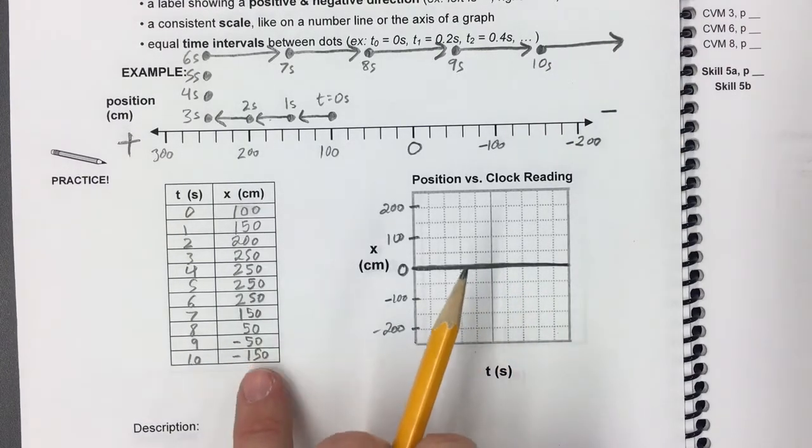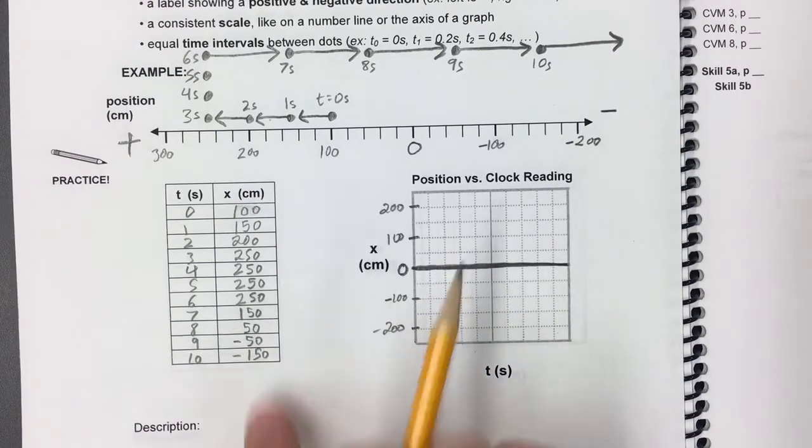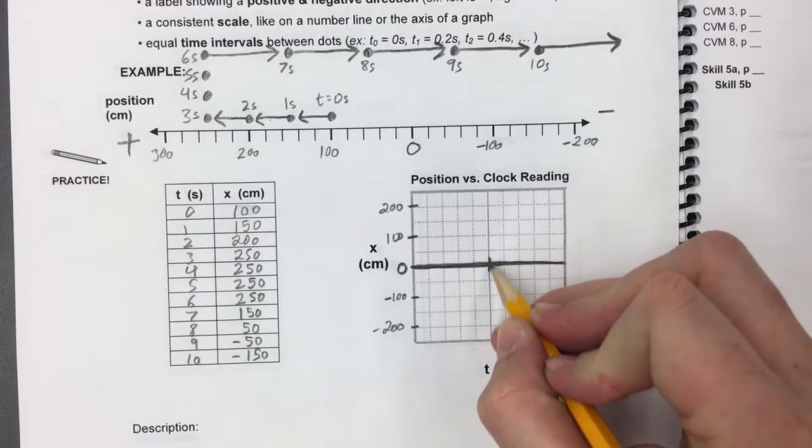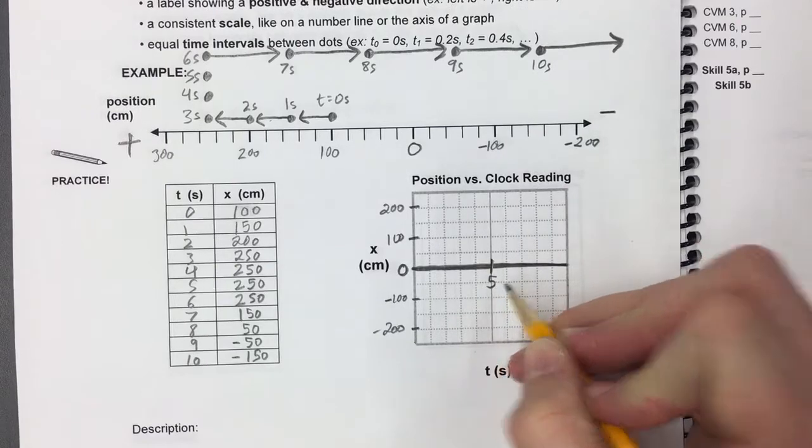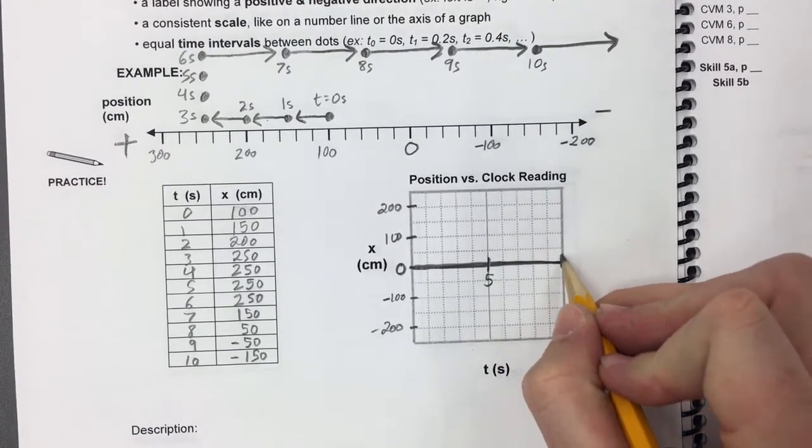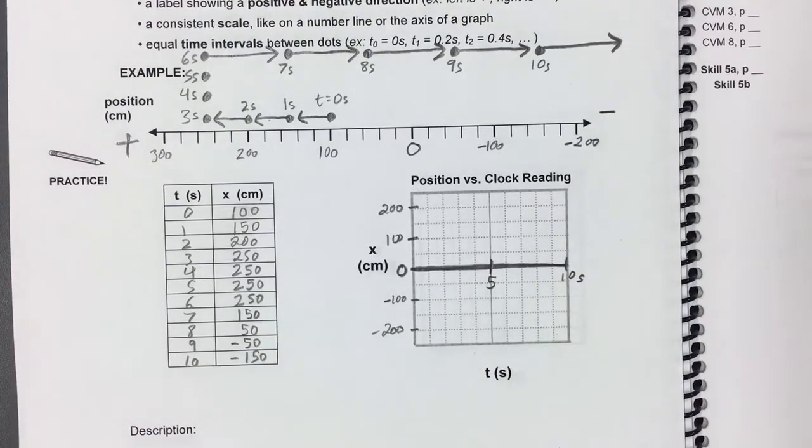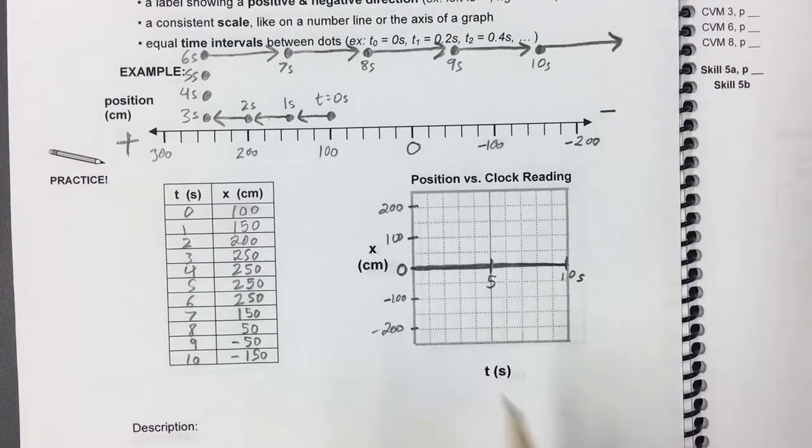These position numbers are negative. And I need to label my time axis also. I'm going to label it right here. We'll call this 5 seconds, and we'll call this 10 seconds to give us enough room on that axis. That makes this 1, 2, 3, 4. You don't have to label those if you don't want to.